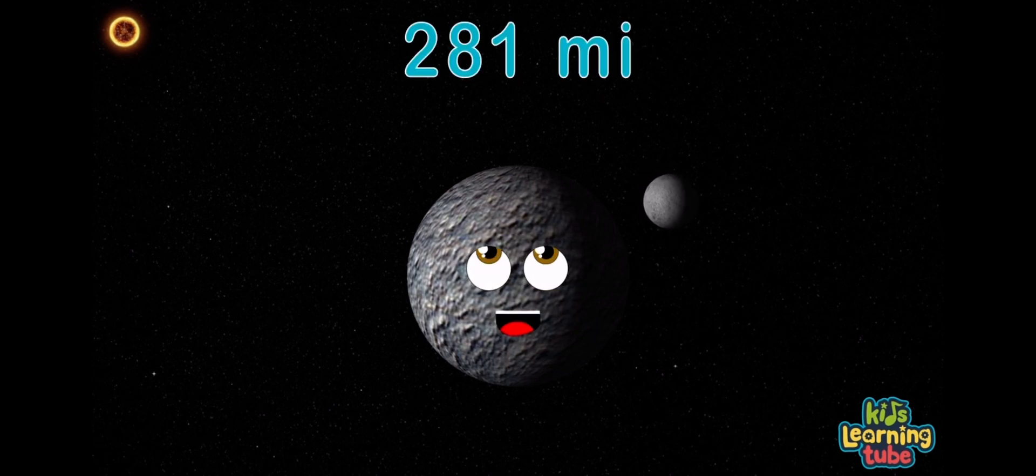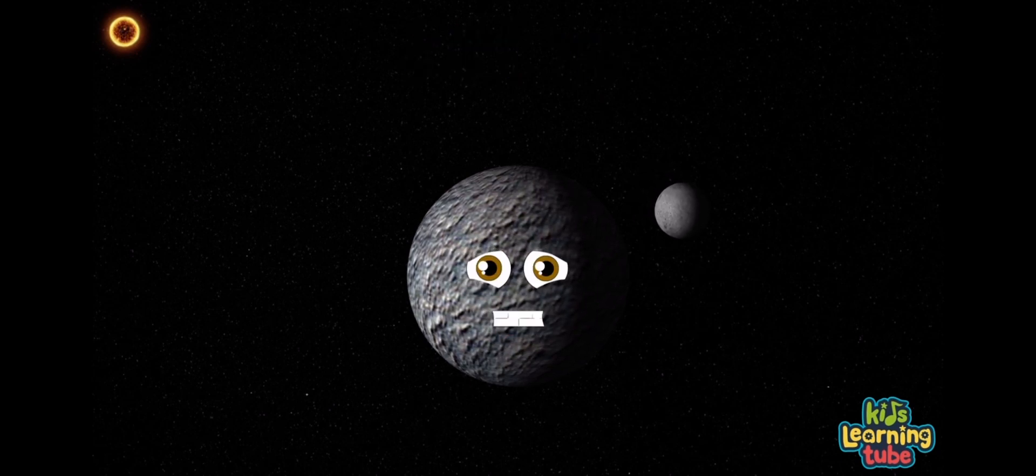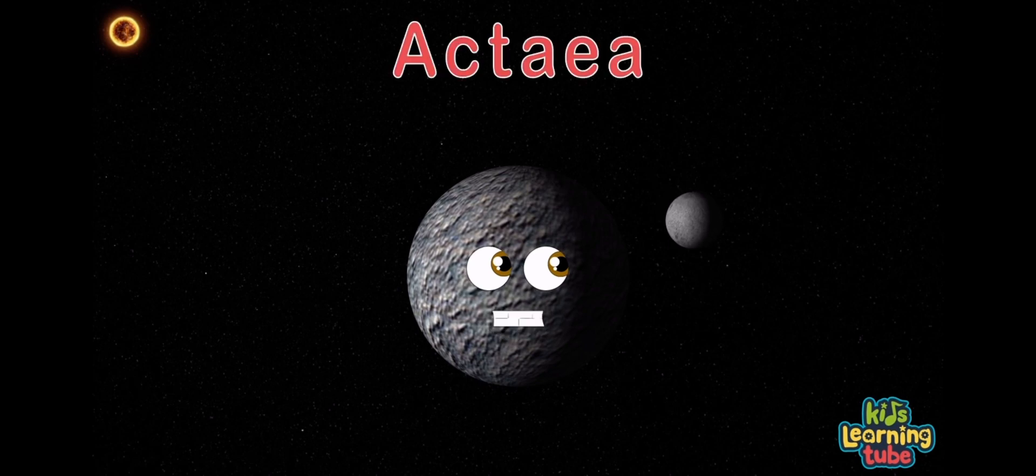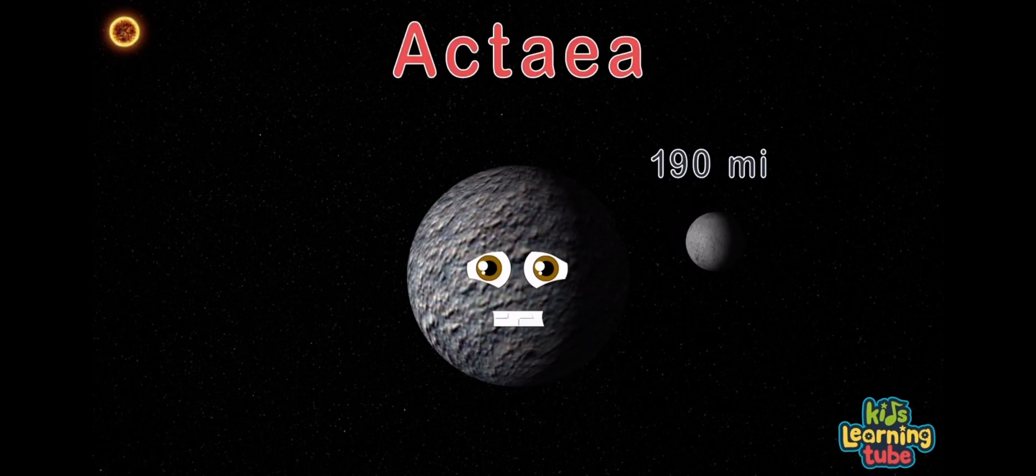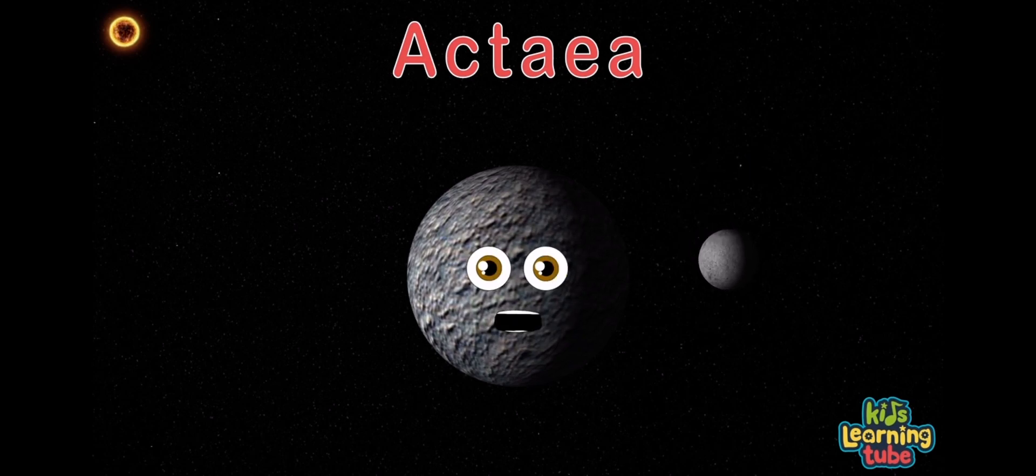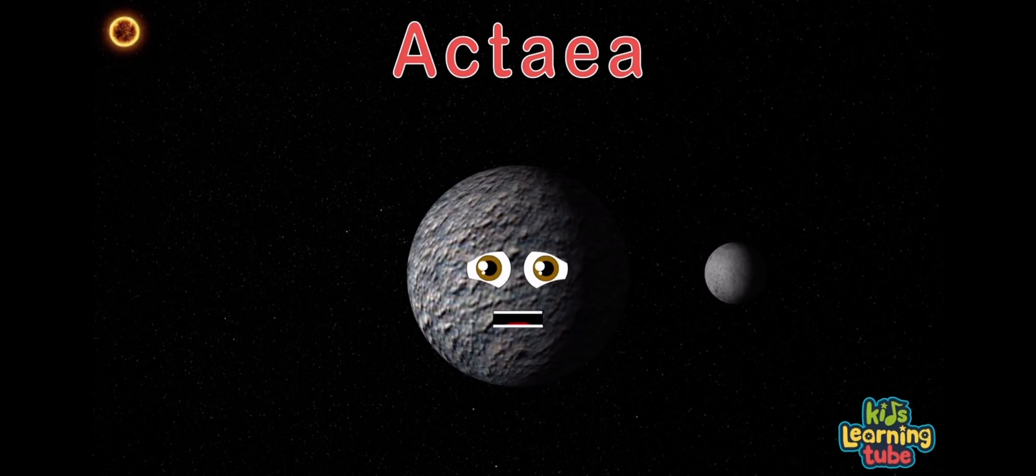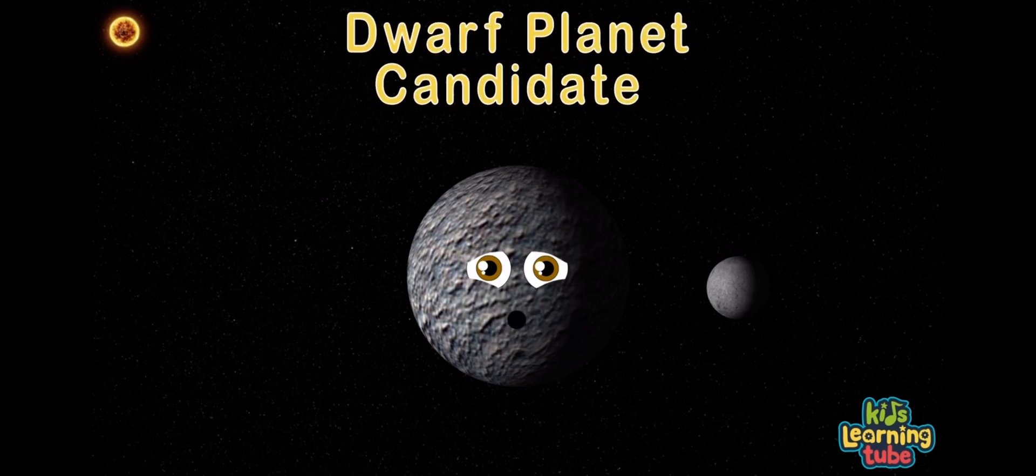I have a single known moon named Actaea here. Its diameter's 190 miles as it appears. Actaea is one third of the diameter of me, you see. Michael Brown thinks I'm a dwarf planet, but it's a debated theory.